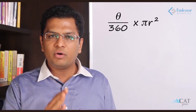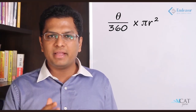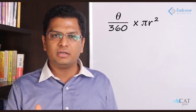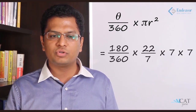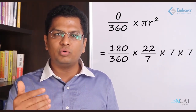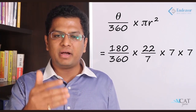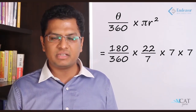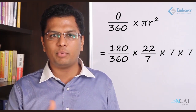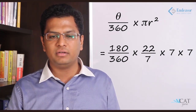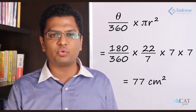So 180 degrees is nothing but half a circle or semicircle. Now let's look at the area. Area of a circle is pi r square, so here since it is half a circle, it will be pi r square by 2. That is pi into 7 square divided by 2, which gives us 22 into 49 upon 14. That will give us an answer of 77 square centimeters.